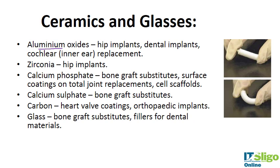Aluminium oxide, or alumina, is used in hip implants, dental implants, and cochlear replacements — inner ear replacements — for a number of reasons: it's light, strong, a good insulator, and inert. Dental implants use it for the same reasons, and hip implants use it for its hardness.